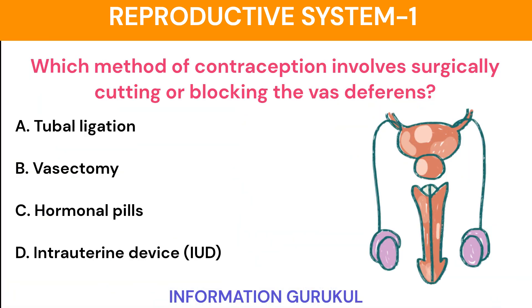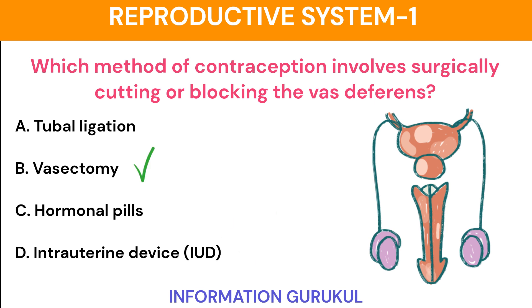Which method of contraception involves surgically cutting or blocking the vas deferens? Vasectomy.